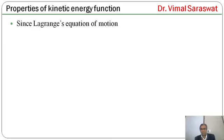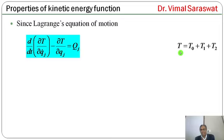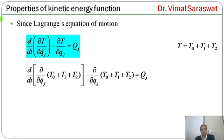Since Lagrange's equation of motion is d/dt(∂T/∂qj_dot) - ∂T/∂qj = Qj, and the total kinetic energy T = T0 + T1 + T2, substituting T gives: d/dt(∂/∂qj_dot(T0 + T1 + T2)) - ∂/∂qj(T0 + T1 + T2) = Qj.